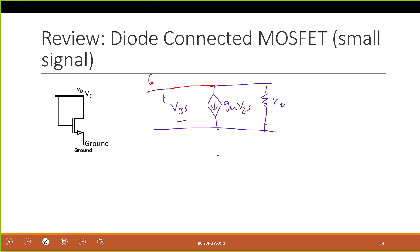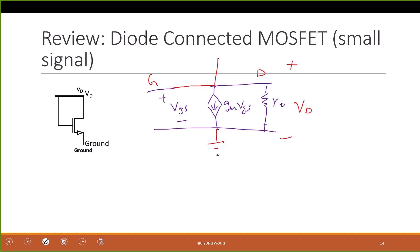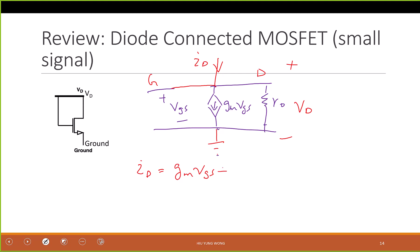Gate is connected to drain. I call this whatever — gate or drain — and this is connected to ground. The purple one is the small signal model. Now I just follow the connection: gate connected to drain, then this connected to this. My goal is to find out what is the impedance. I apply VD to it, and what is ID? This is ID, because it's two terminal. These are connected together, so you don't care about where G is connected. What is ID in this case? It equals Gm·Vgs plus the current through R0.